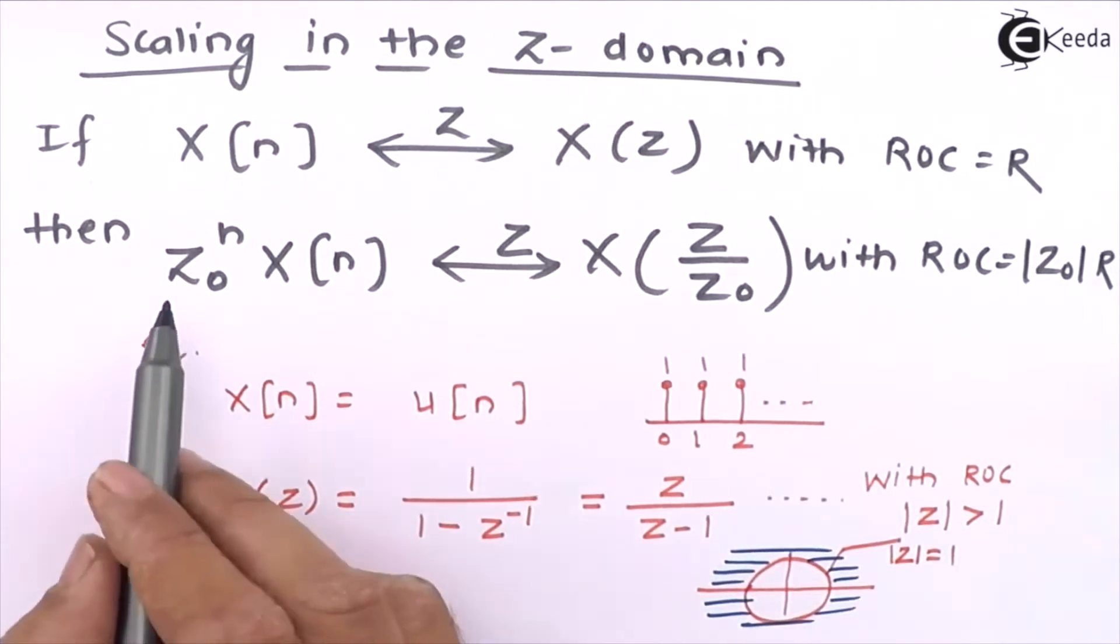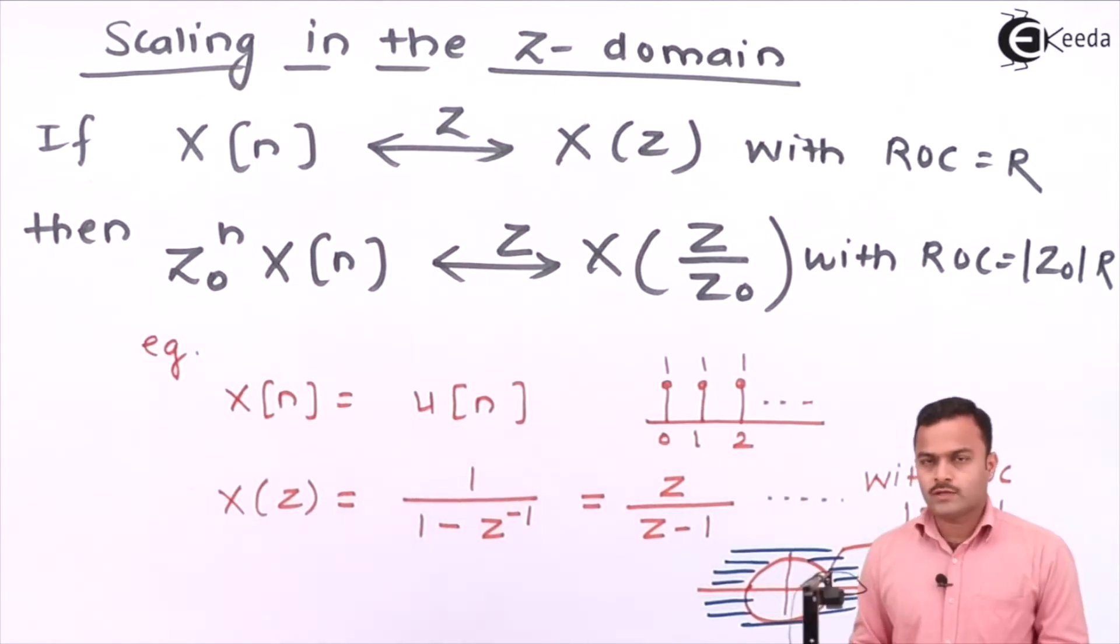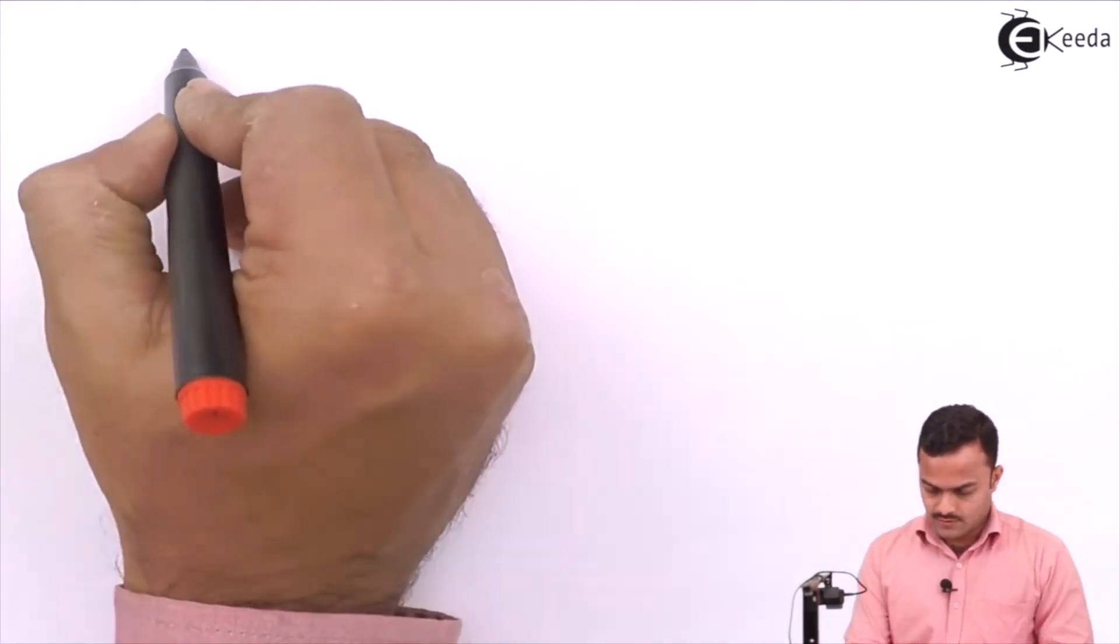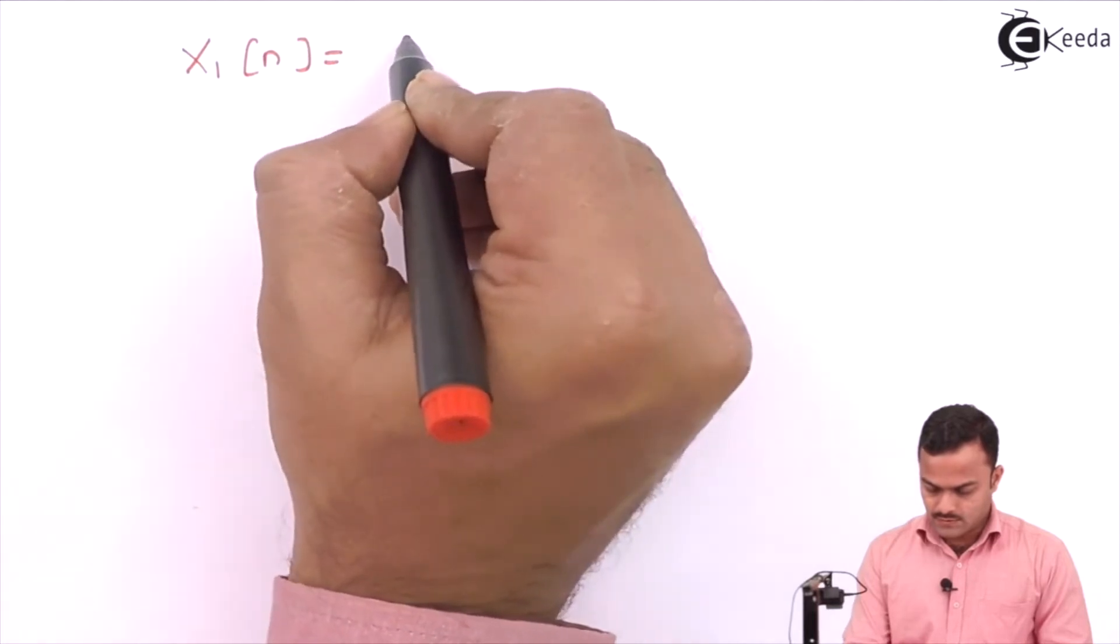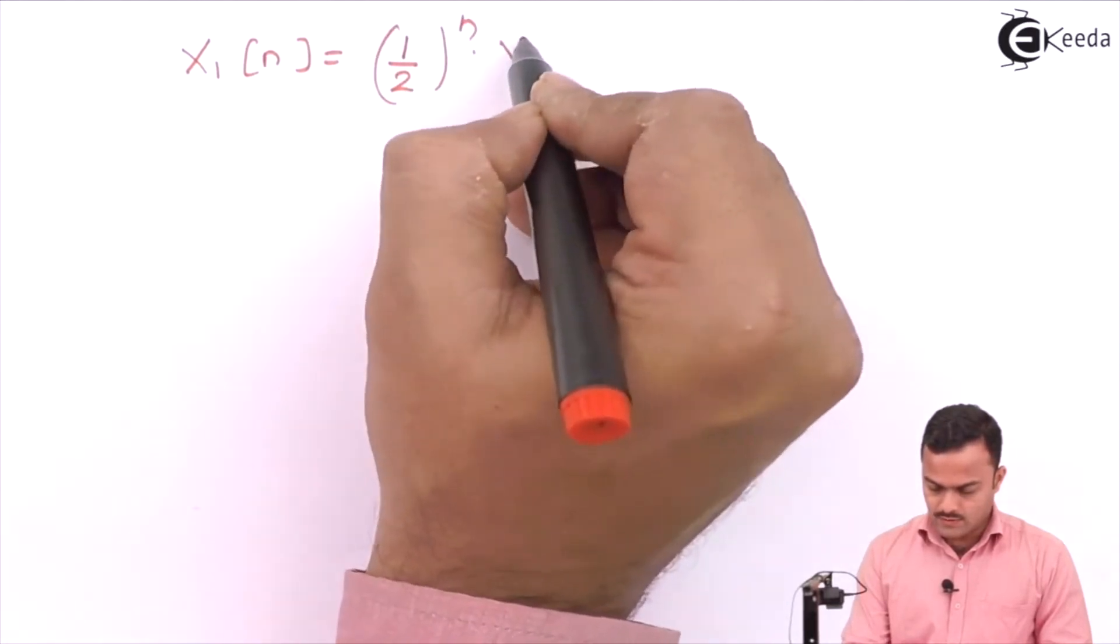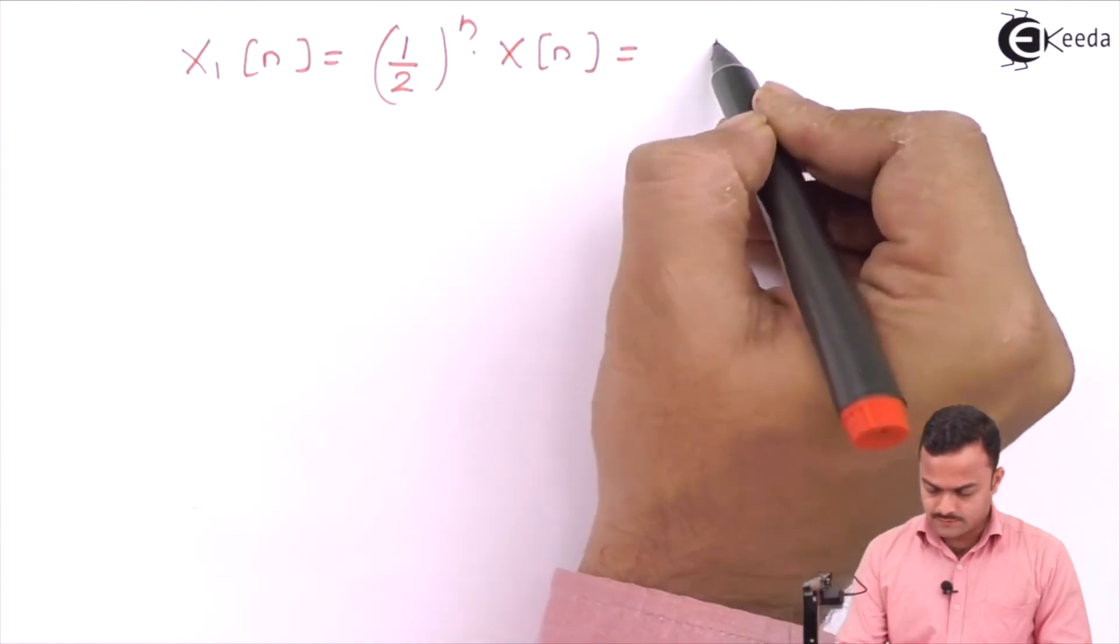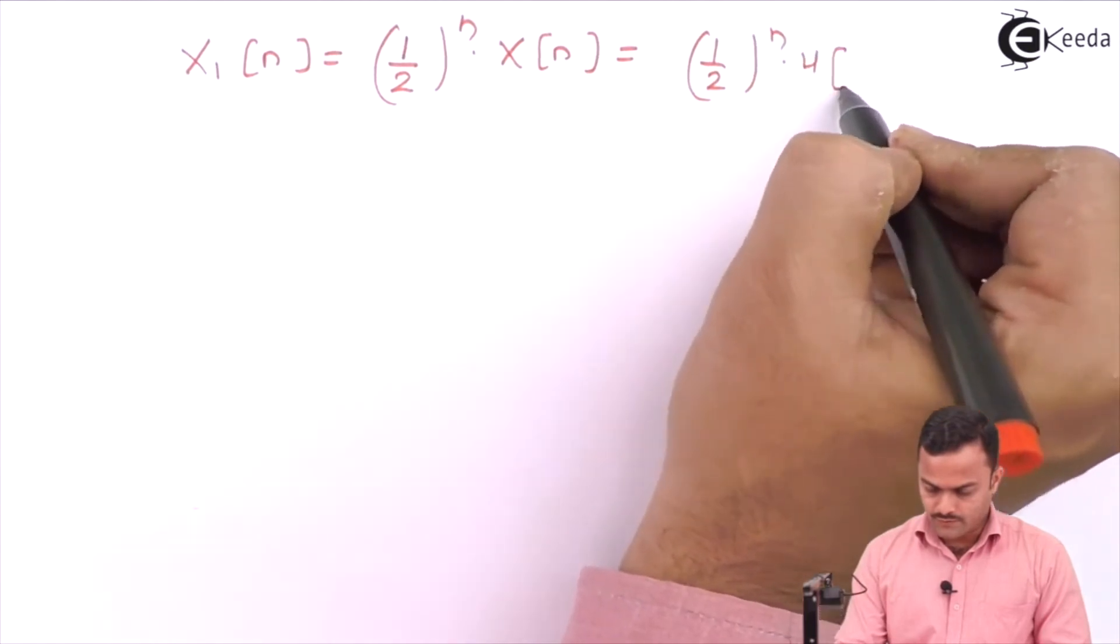Now what I will do, I will multiply this signal with 1 by 2 raise to N. So the new signal I will get as X1 of N which is nothing but 1 by 2 raise to N U of N.